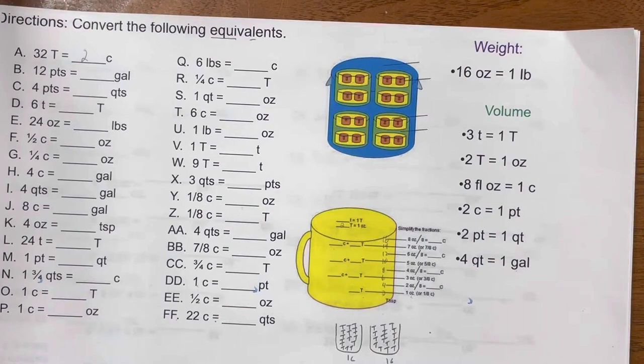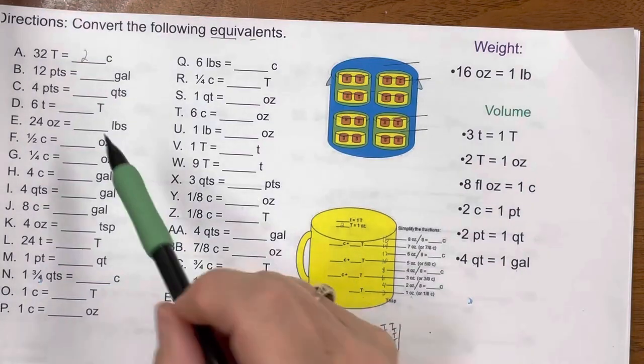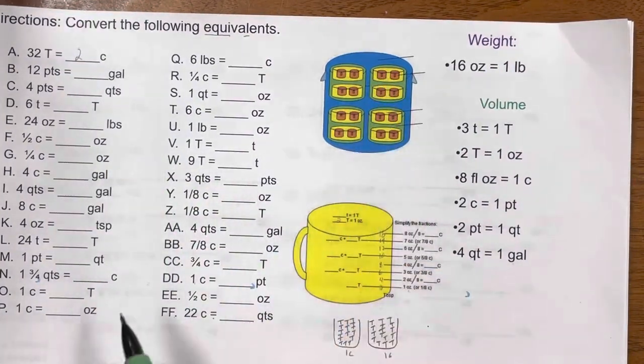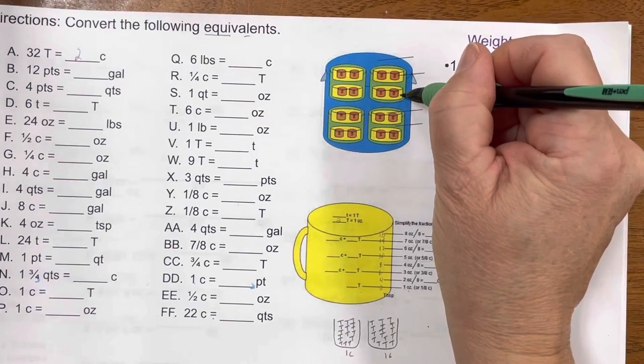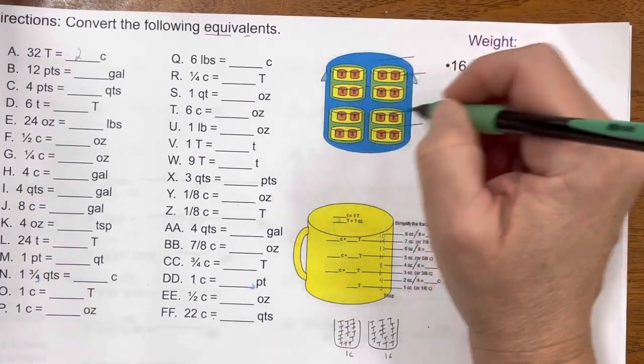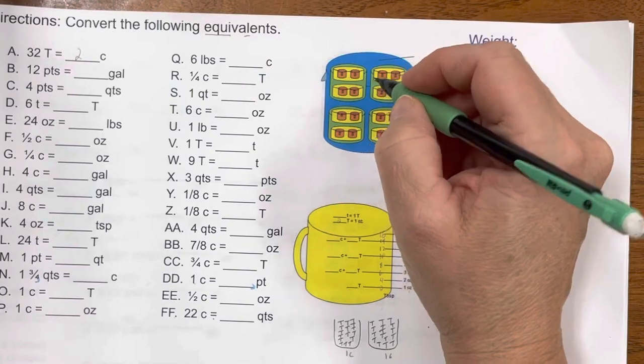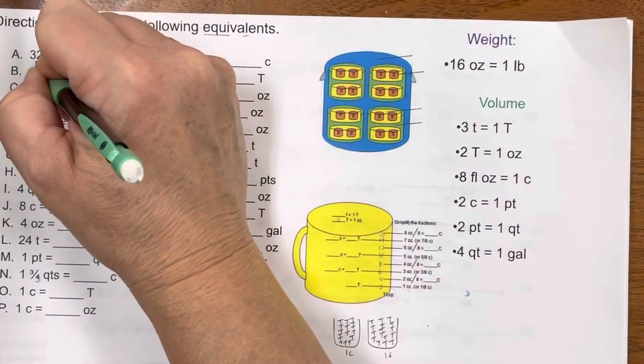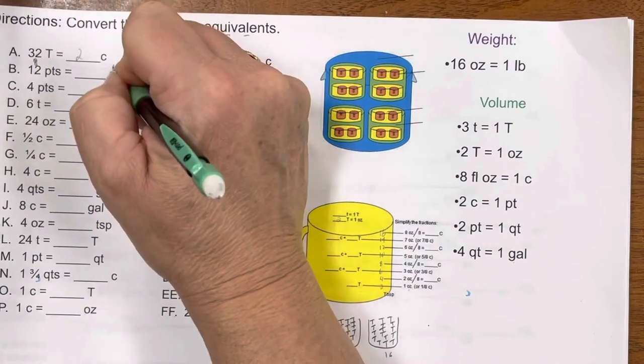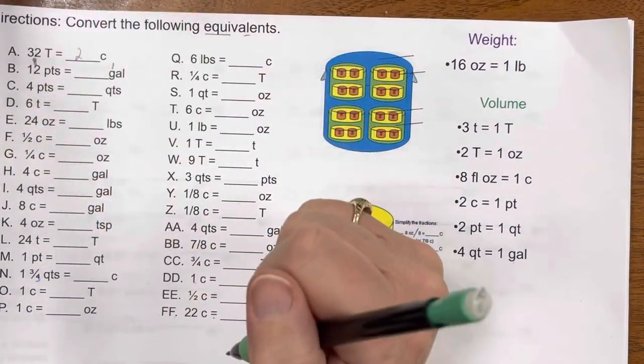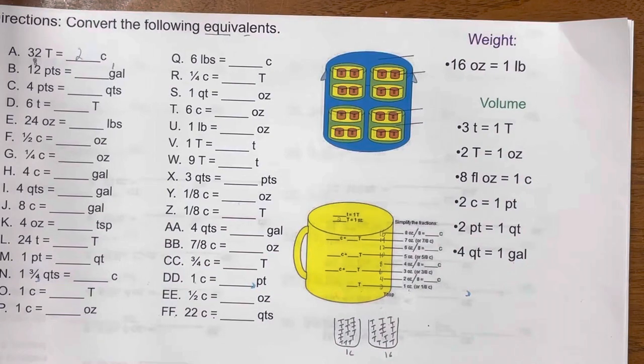The next item, I have pints to gallons. If I look at this one, and I remember that the yellow ones are the pints, then I know that there are 8 pints in a gallon. So if there are 8 pints in one gallon, and I have 12 pints, some of you can probably do this in your head quite easily. Basically, it's 8 goes into 12 how many times? And that would be one and a half gallons.